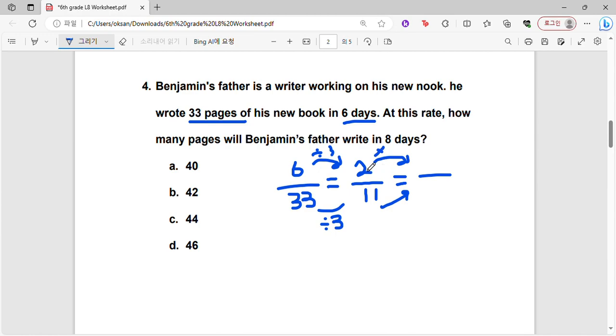In order to get 8 days, we can do the 2 days multiplied by 4 to get 8 days, and that means we multiply 4 here as well. So 11 times 4 is 44, and therefore C is the correct answer.